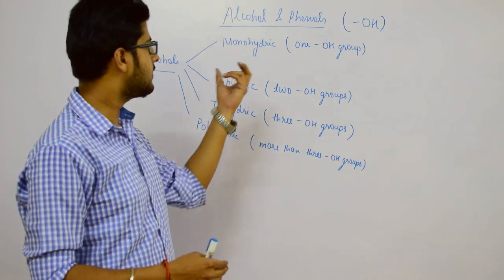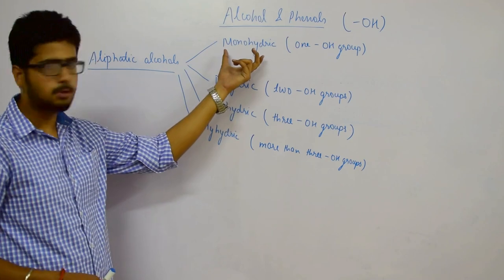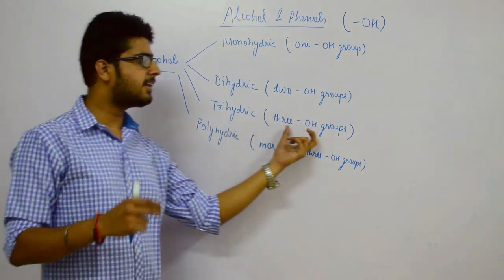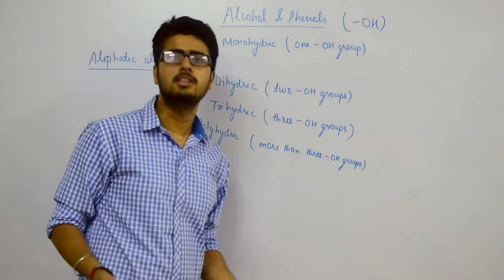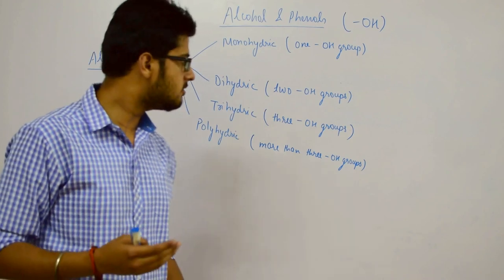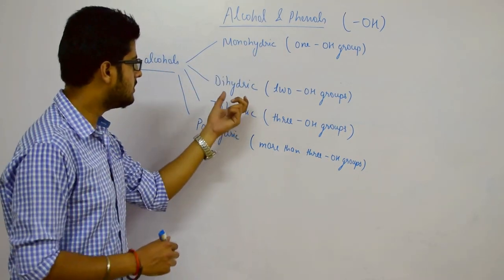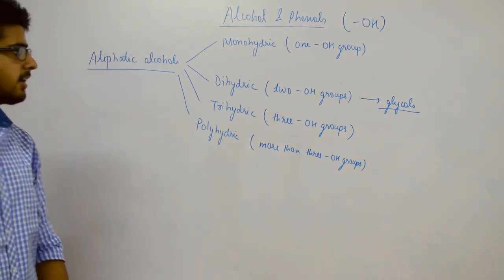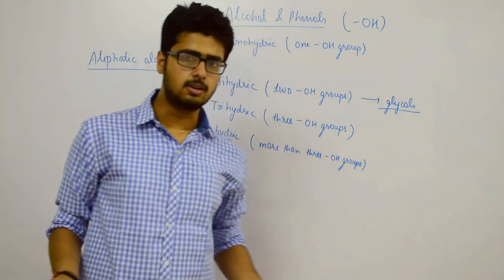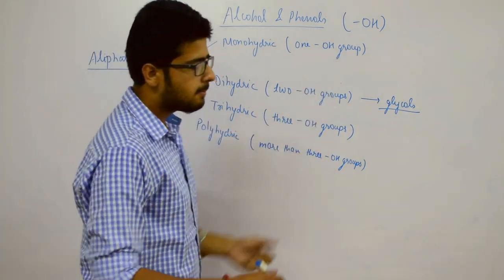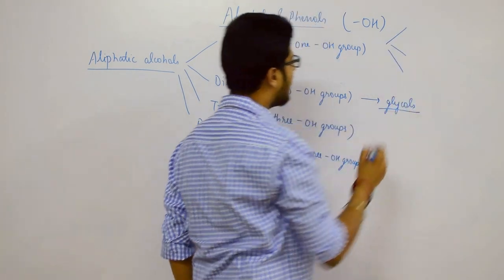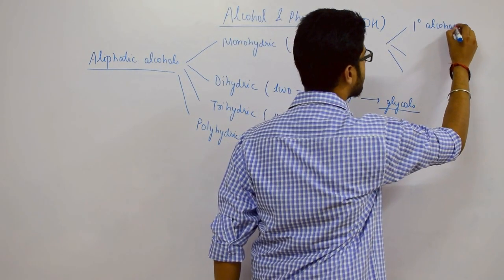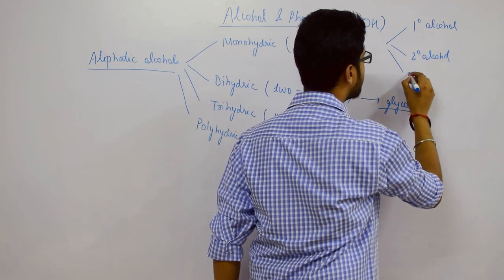Aliphatic alcohols are further classified into four categories: monohydric containing only one OH group, dihydric containing two OH groups, trihydric containing three OH groups, and polyhydric with more than three OH groups. Dihydric alcohols are also called glycols. Monohydric alcohols are further divided into three classes: primary alcohol, secondary alcohol, and tertiary alcohol.